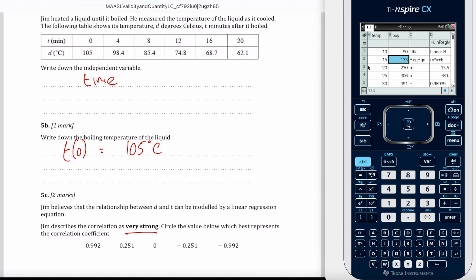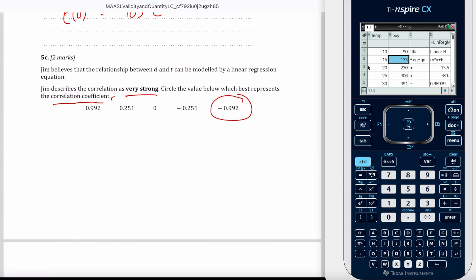If he wants to determine whether it's very strong, he's looking at R squared, but it's asking for the correlation coefficient here, which is R. Because time is increasing and temperature is coming down, we're looking for a negative value, and the only negative value that's very strong, that when we square it gives very strong values, is 0.992.